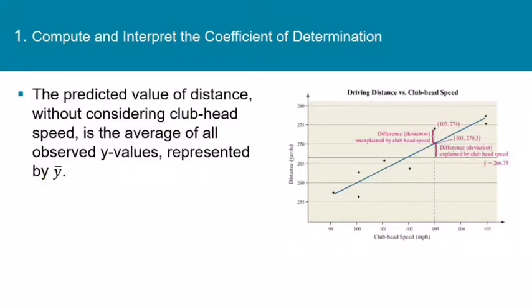In other words, if we didn't have any information about clubhead speed and we needed to make a prediction for the distance traveled by the ball on the next swing, then the best we could do would be to average all of the y values we have. That's the line you see here, this dark line right here. That's y bar. And for this data set, y bar is 266.75.